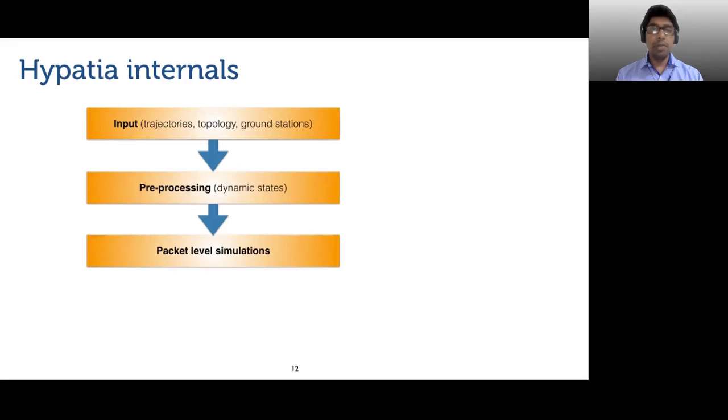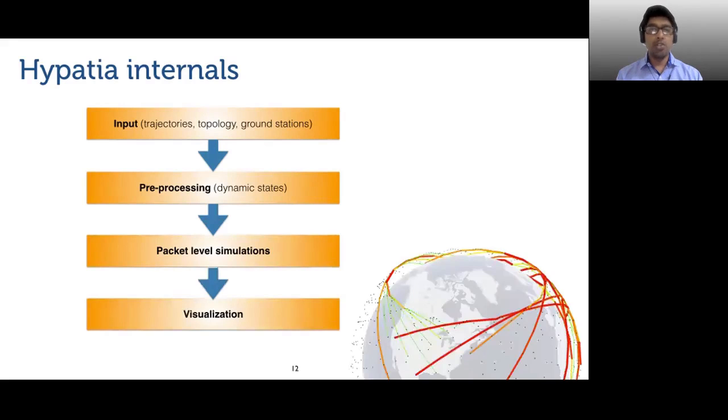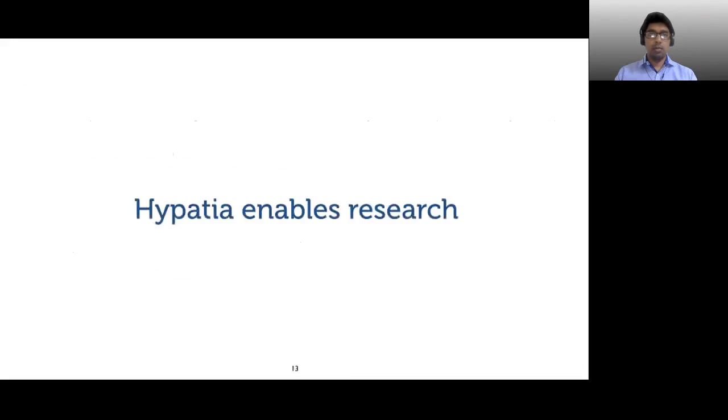Link properties are updated in a lazy fashion before a packet is sent. Hypatia allows the production of visualizations using cesium such as the one you can see on the right side showing link utilization for a traffic matrix. In a nutshell, Hypatia is a framework for simulating and visualizing large LEO networks, thus enabling research on these networks.